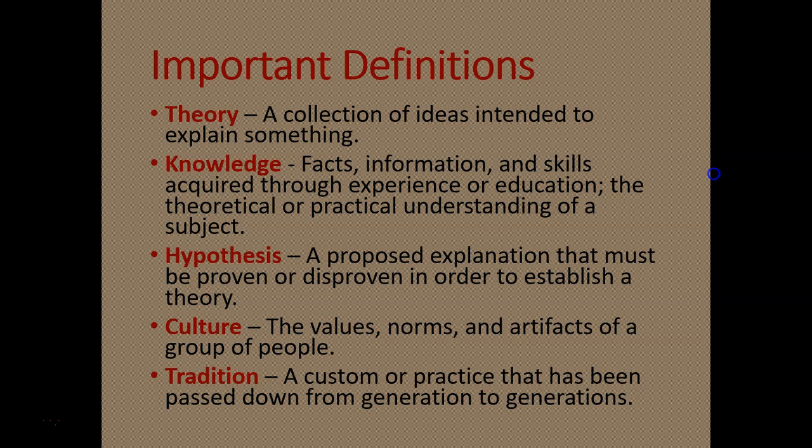Here are some important definitions we need to know. Theory is a collection of ideas intended to explain something. Knowledge is facts, information, and skills acquired through experience or education — it is a theoretical or practical understanding of a subject. A hypothesis is a proposed explanation that must be proven or disproven in order to establish a theory. Culture and tradition are very important concepts as well.